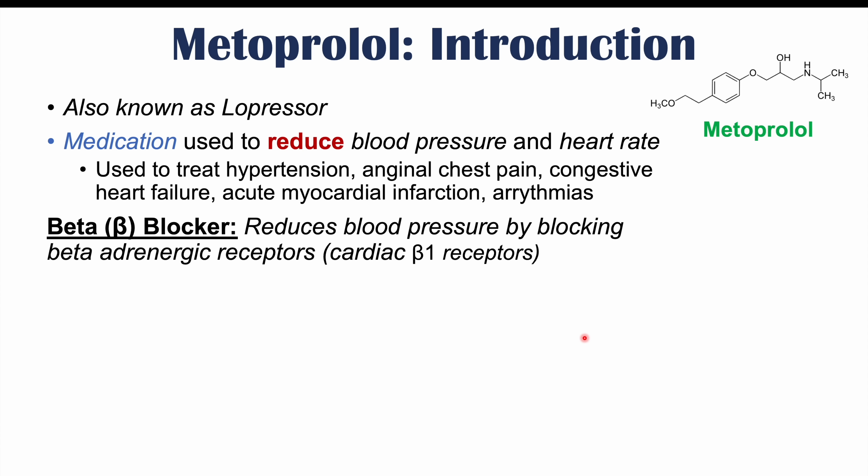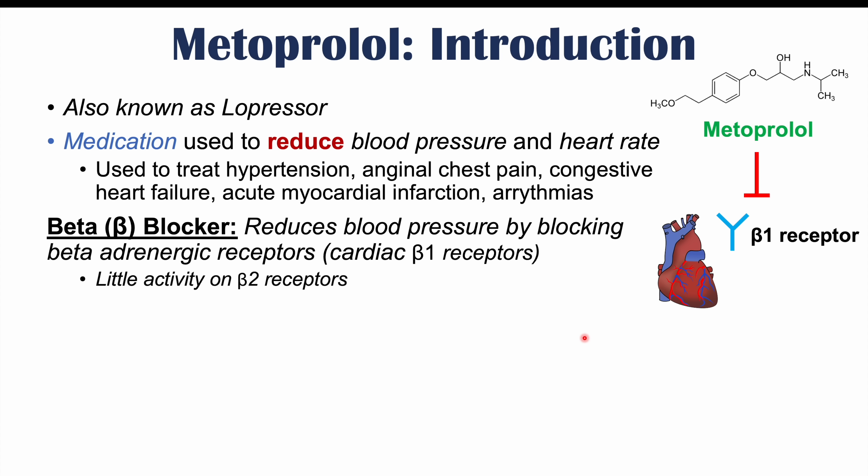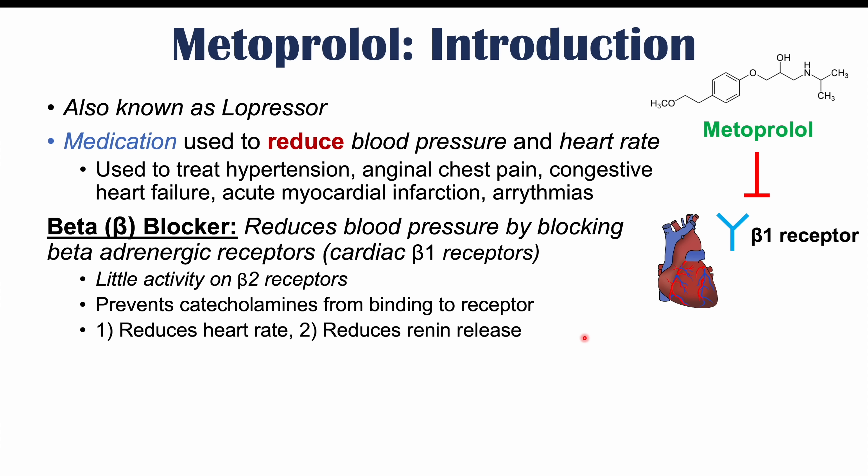Metoprolol is a beta blocker, so it reduces blood pressure by blocking beta-adrenergic receptors — more specifically, beta-1 receptors in the heart. It has little activity on beta-2 receptors. By blocking beta-1 receptors, it prevents catecholamines like epinephrine and norepinephrine from binding, which helps reduce heart rate and renin release, both of which lead to reduced blood pressure.